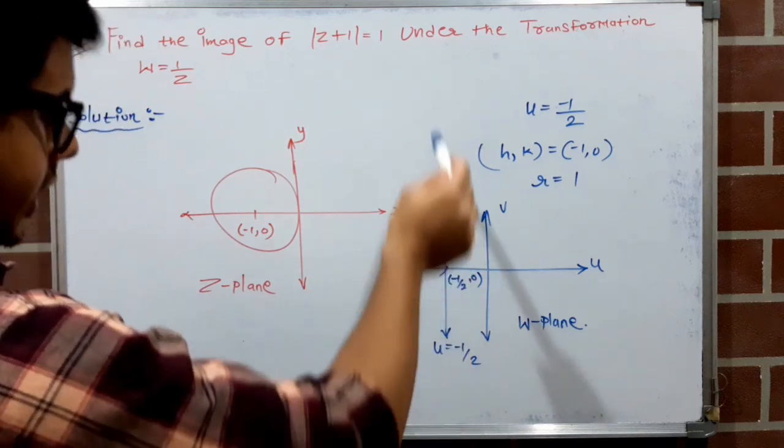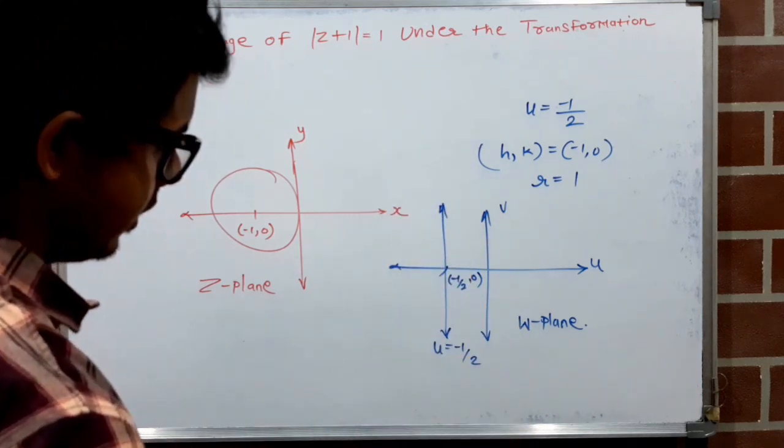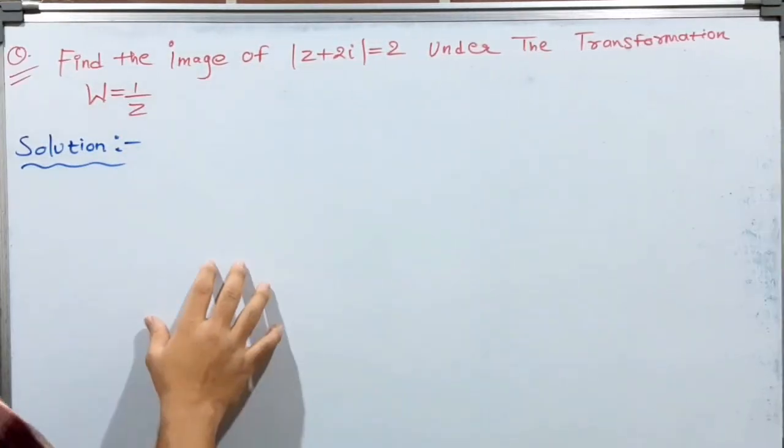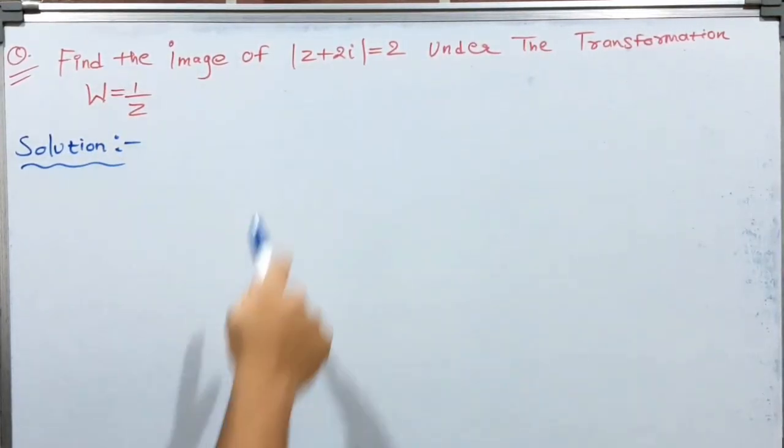So the circle in the z-plane with center (−1, 0) and radius 1 is mapped to the vertical line u = −1/2 in the w-plane by the inversion transformation.